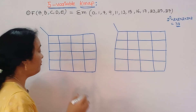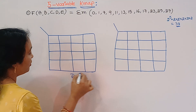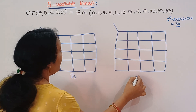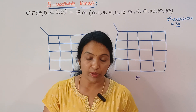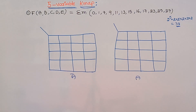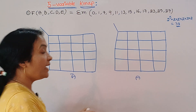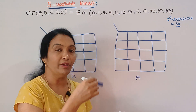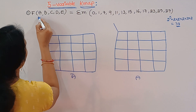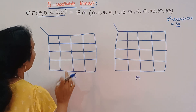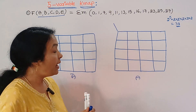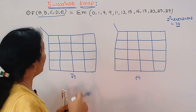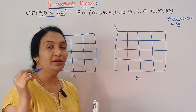The first variable is A-bar and A. For 5 variables A-B-C-D-E, how many variables are B-C-D-E?